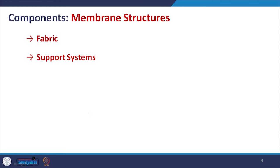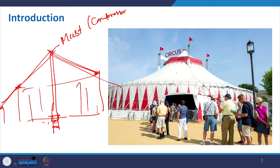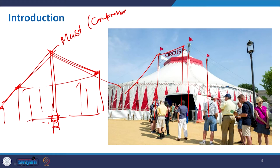The overall fabric or membrane structure has two components: one is the membrane, a very thin cloth-like material, and the other is the support system. In the support system it may be a single mast, or tension cables. Looking at an example with four masts: there is a central post giving tension to all cables, creating the internal volume form for purposes like a circus tent.